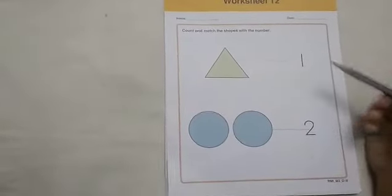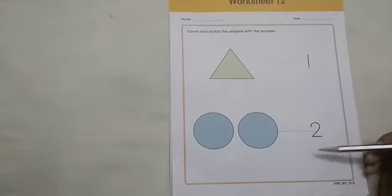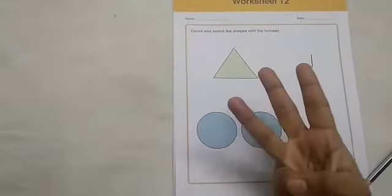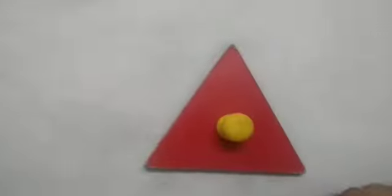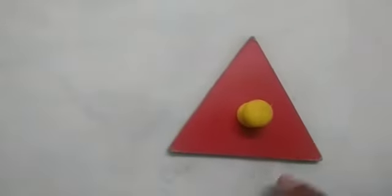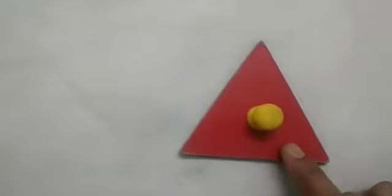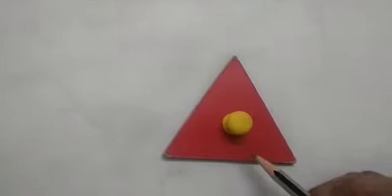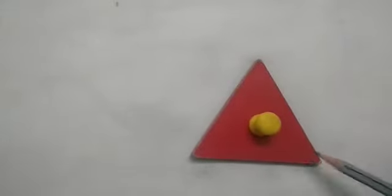This is number 1, this is number 2. Now I am going to tell you about number 3 and number 4. So dear little kids, this is a triangle. How many sides does a triangle have? Let's count — 1, 2 and 3. Triangle has 3 sides.